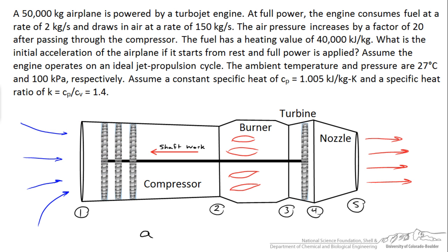To solve this problem we want the acceleration of the airplane. By Newton's law, acceleration equals the thrust force divided by the mass of the airplane. From a momentum balance around the engine, the thrust force equals the mass flow rate of air times the difference in velocity — V5 minus V1. Assuming V1 is approximately zero, thrust equals mass flow rate times V5. The thermodynamics will allow us to calculate V5, and from there we find the force and hence the acceleration.